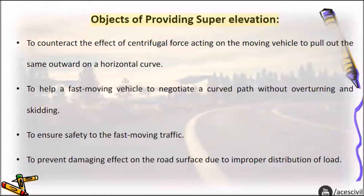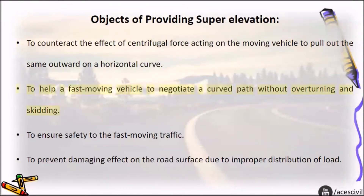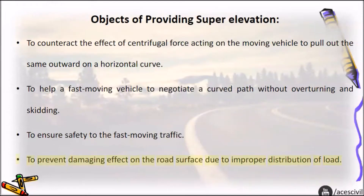Objects of providing super elevation: To counteract the effect of centrifugal force acting on the moving vehicle pulling it outward on a horizontal curve. To help a fast moving vehicle negotiate a curved path without overturning and skidding. To ensure safety to fast moving traffic. To prevent damaging effects on the road surface due to improper distribution of load.